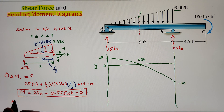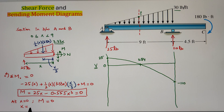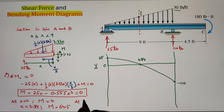At X equals to zero, the value of M is equals to zero. At X equals to 3.84, we are getting a value of 64.5 pound-feet. Finally, at X equals to nine, we are getting a value of moment of negative 180 pound-feet. Once we have the three values, let's go ahead and plot this on the diagram.